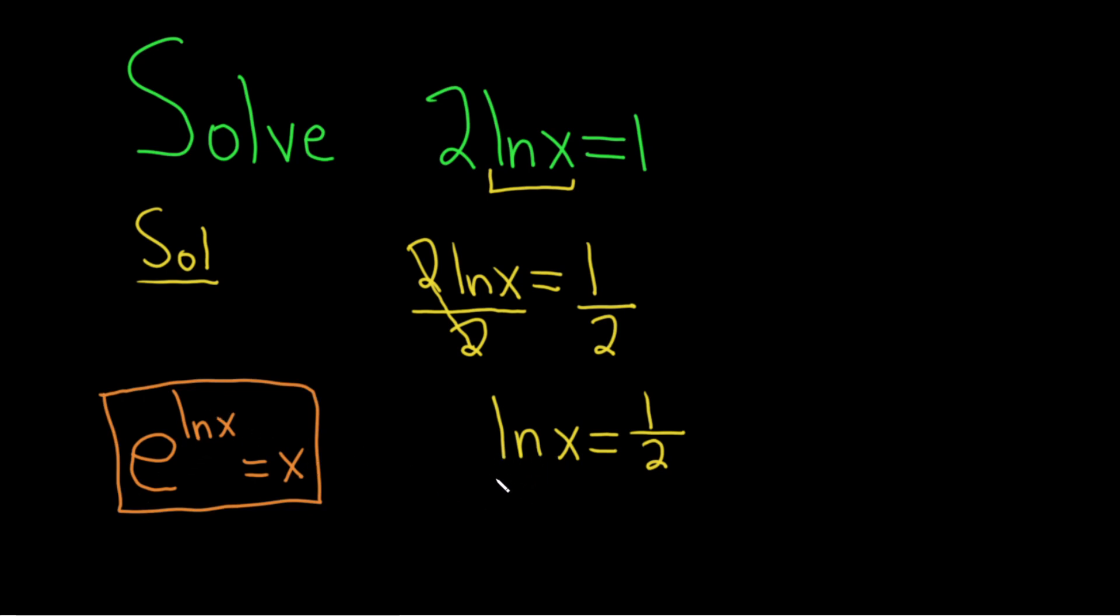So we're just missing the e here, so we'll put an e here, and we'll put an e here. This is called exponentiating. So now these go away, so we're left with x equals e to the 1 half.